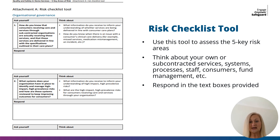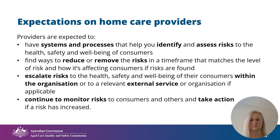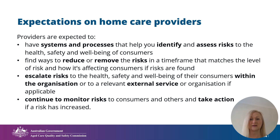In the risk guidance from page 36 is a risk checklist tool you can add to your risk management toolbox. You can use the tool to critically examine your organisation's performance, better position yourself to deliver quality care and services, ensure you're meeting regulatory obligations, and support a culture of continuous improvement. The tool prompts you to ask questions relating to the five key risk areas. You're expected to have systems and processes that help you identify and assess risks to the health, safety and wellbeing of older people. If risks are found, find ways to reduce or remove them in a timeframe that matches the level of risk, escalate those risks within the organisation or to a relevant external service, and continue to monitor risks and take action if a risk has increased.